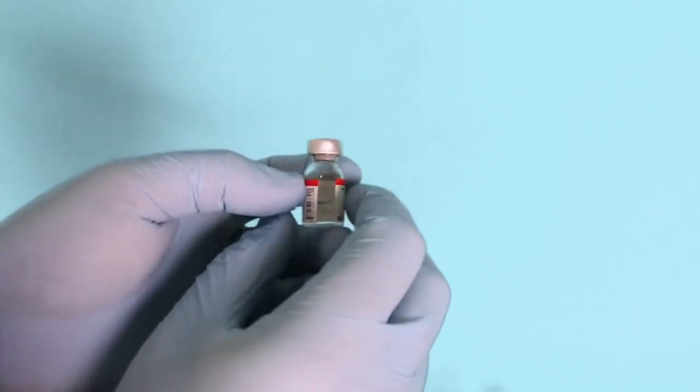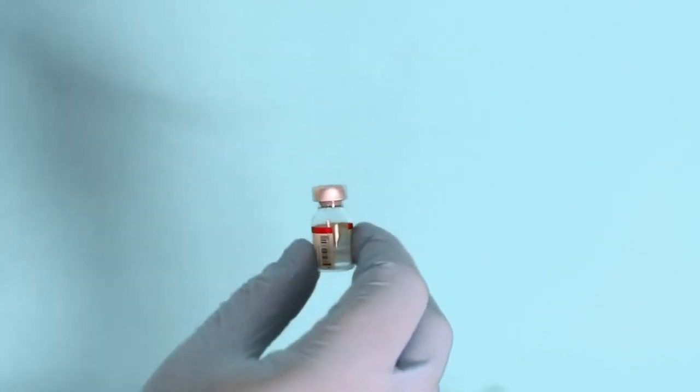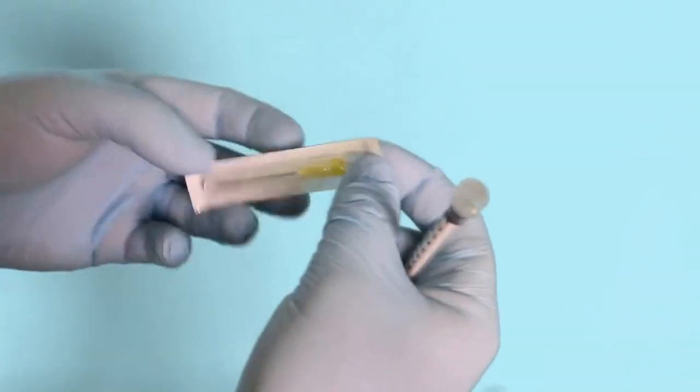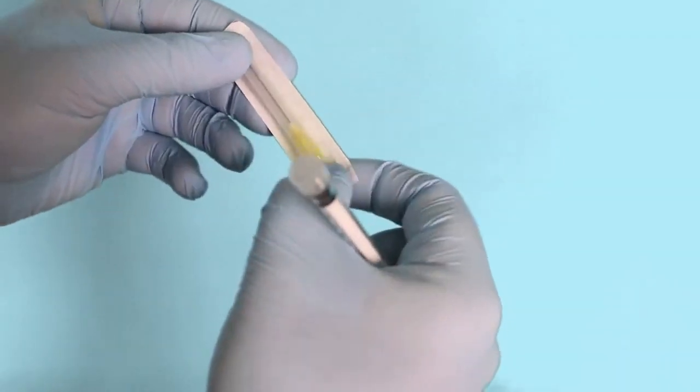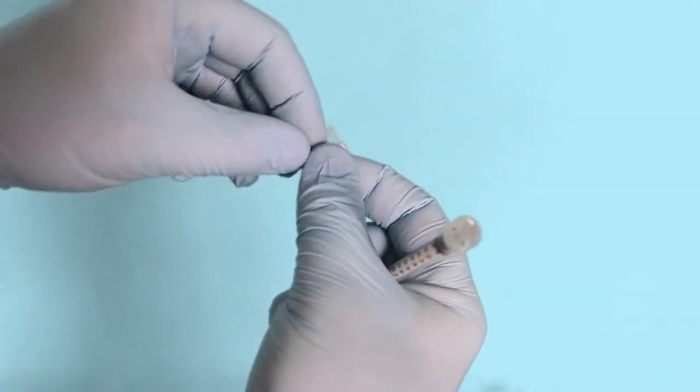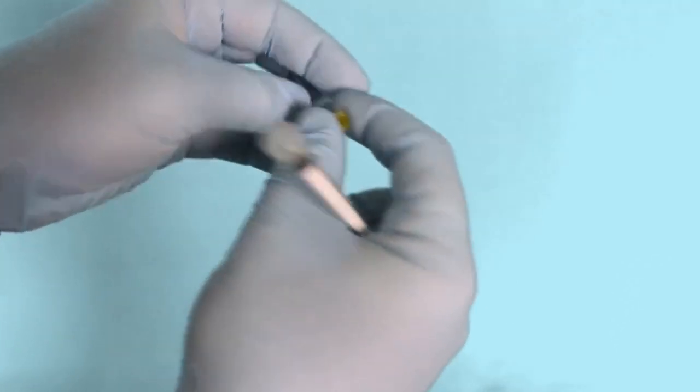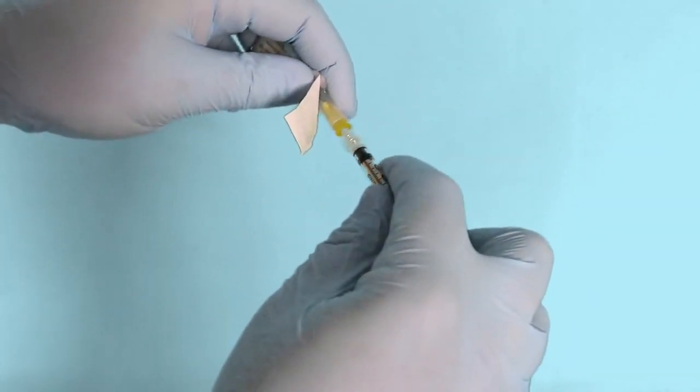Secondly, in order to remove fluid from a vial, we first need to inject an equal volume of air into that vial as the amount of fluid we wish to withdraw. This compensates for negative air pressure that would be created by attempting to remove fluid.